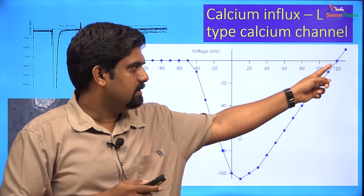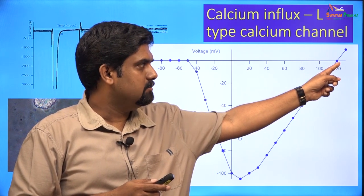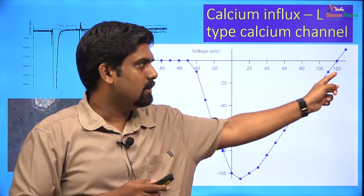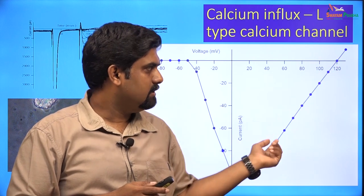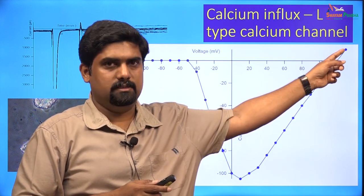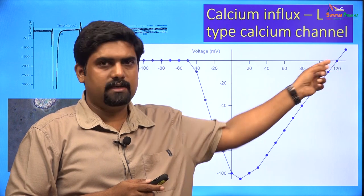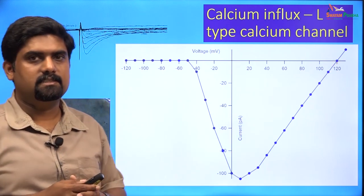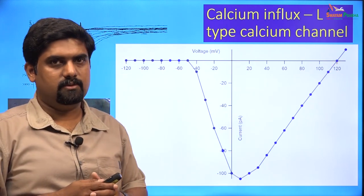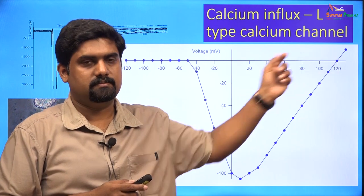When the membrane is depolarized beyond plus 120 millivolts, this inward calcium current becomes outward. This is the reversal potential, or equilibrium potential, for calcium.